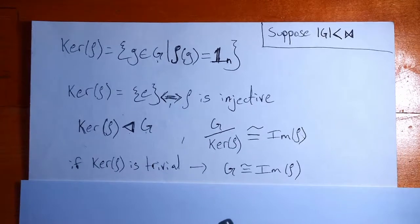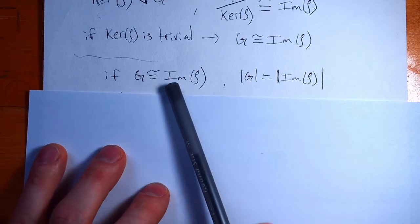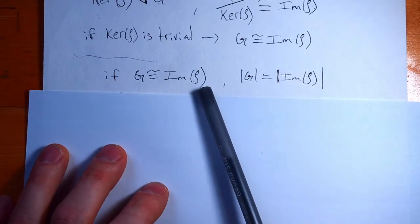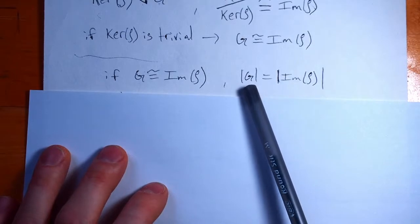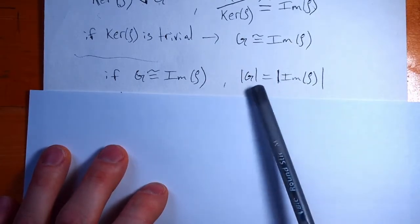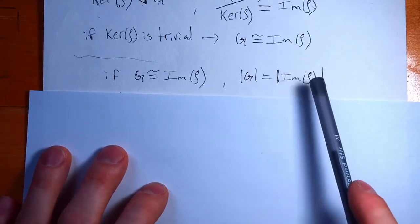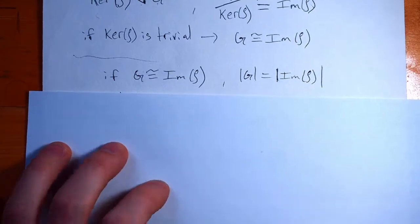But I want to go one step further and show that this is an if-and-only-if statement. Now we're going to go the opposite direction. We're going to assume G is isomorphic to the image of rho, our representation, and that means that the order of G has to be equal to the order of the image, right? Our original group, the order of the original group, has to be equal to the order of the set of matrices that we're using to represent this group.